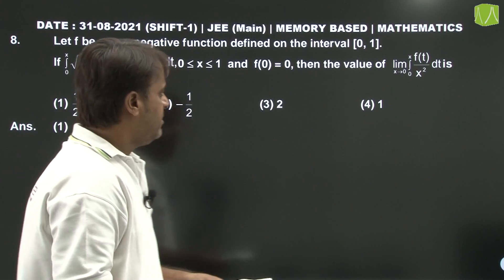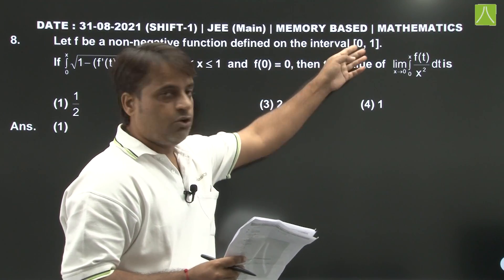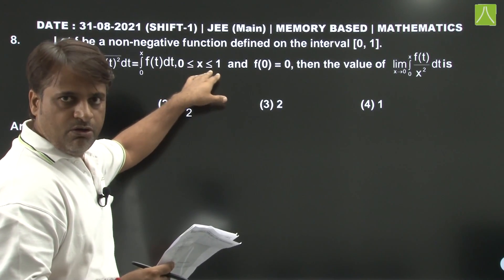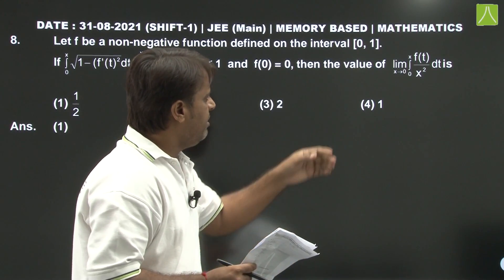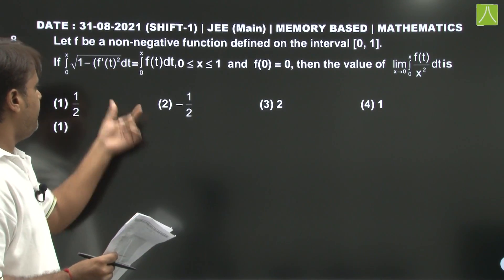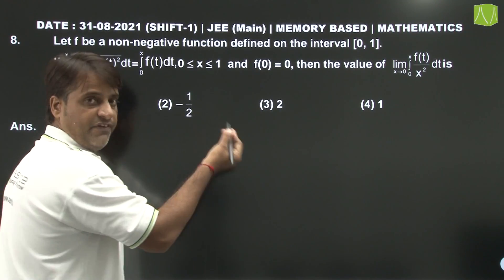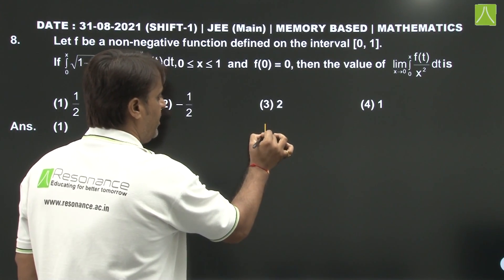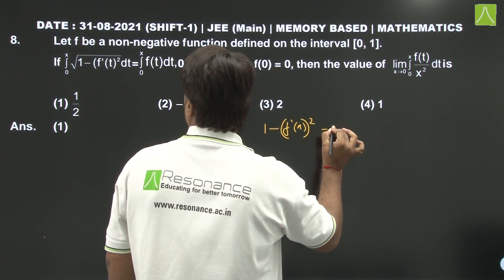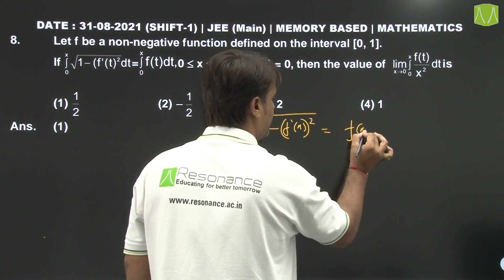All these questions are memory based. Let f be a non-negative function defined on interval 0 to 1 with x lying between 0 and 1. f(0) equals 0 is given and we have to calculate a limit. To find the limit, we first find the function. Differentiating both sides of the given condition, we get: 1 minus f'(x) whole squared equals square root equals f(x). f(0) is 0.